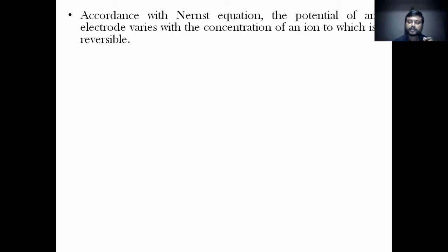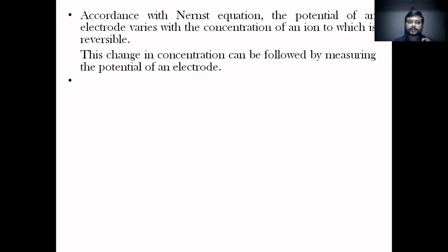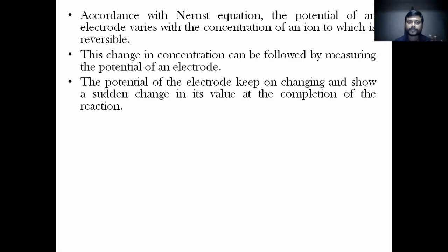The basic principle of potentiometric titration is the Nernst equation. In accordance with the Nernst equation, the potential of an electrode or cell depends on the concentration of the ion, which is reversible. This change in concentration can be followed by measuring the potential of the electrode. The electrode potential keeps changing and shows a sudden change in its value at the completion of the reaction.